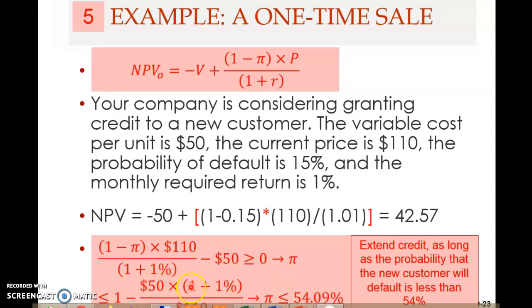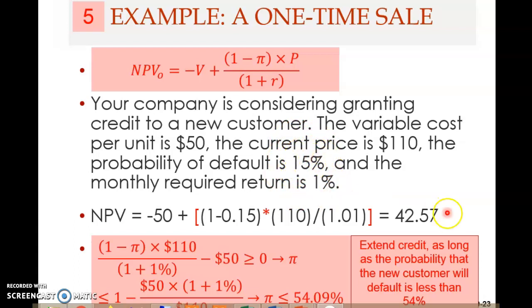The answer is that π must be less than or equal to 1 − [50 × (1 + 1%) / 110]. Rearranging, π ≤ 54%. So if the probability of default for the customer is less than 54%, you should extend credit. If it is more than 54% — say 55% — you should not extend credit. This agrees with our earlier example, where the 15% default probability gave a positive NPV.